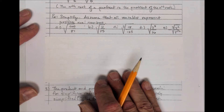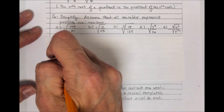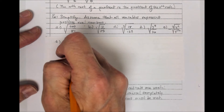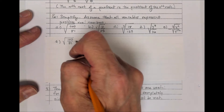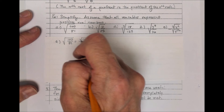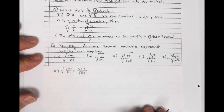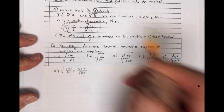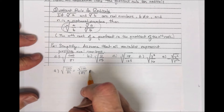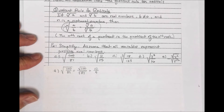Simplify — assume all variables represent positive real numbers. For part A, the square root of 100 over 81: using the quotient rule, this is the square root of 100 over the square root of 81. The square root of 100 is 10 and the square root of 81 is 9, so the answer is 10 over 9.